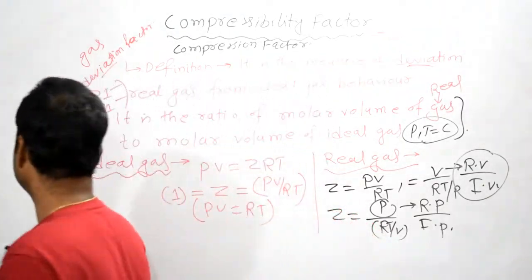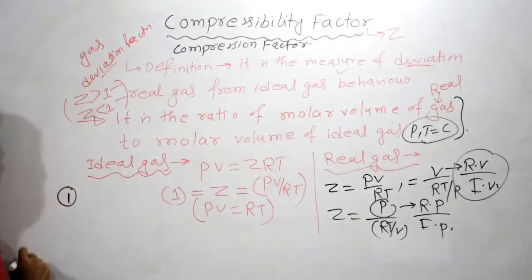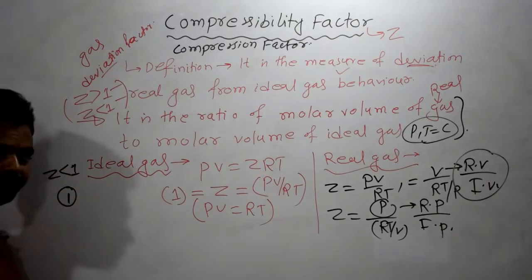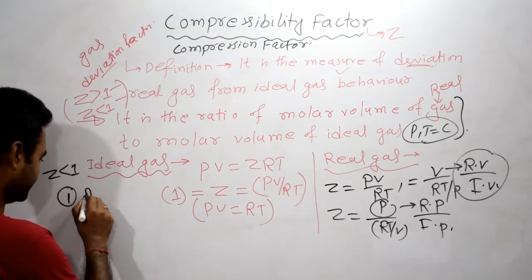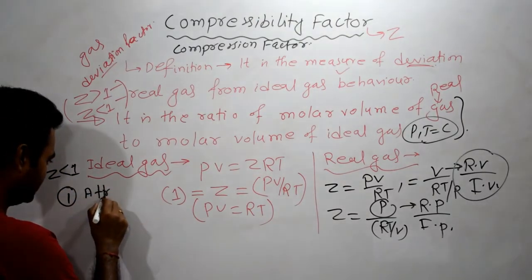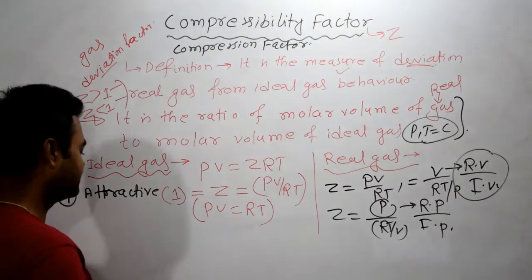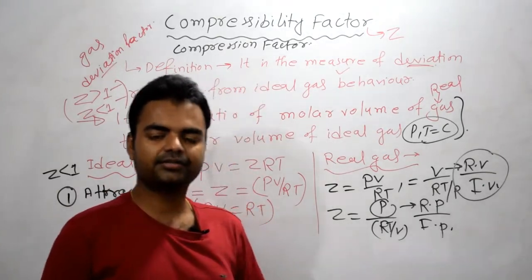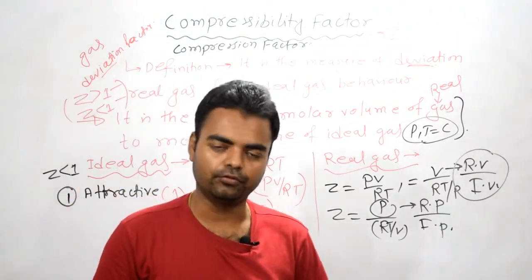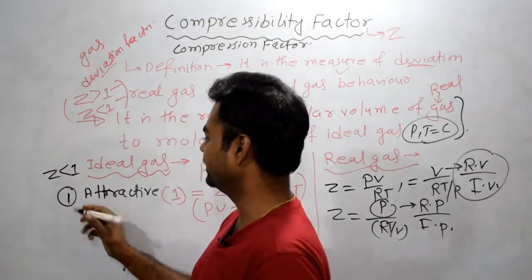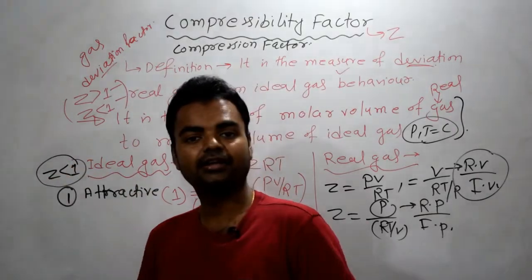Remember, this thing is very important. First one, Z is less than one. If attractive forces, remember this, attractive forces predominant. That means they are more powerful. If attractive forces predominant, then we can say this Z is less than one.